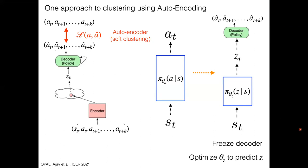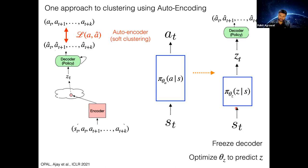A question: why not directly train both encoder and decoder end-to-end at once, instead of freezing the decoder and training the encoder separately? Suppose you want to go to a new task — you had demonstrations for some tasks, and now you want to do something new. You need to modify how to combine skills, but you don't want to relearn the skills again. So you freeze your skills (decoder) and just learn how to combine them by training this mapping from state to z.